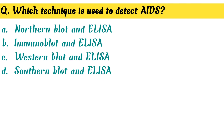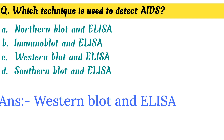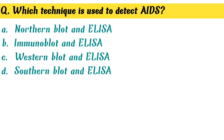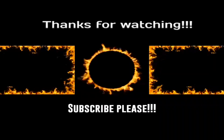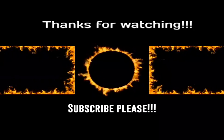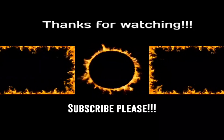Which technique is used to detect AIDS? Option C. Western blot and ELISA is the correct answer. Thanks for watching my video. Please do like, share, and subscribe to my channel.